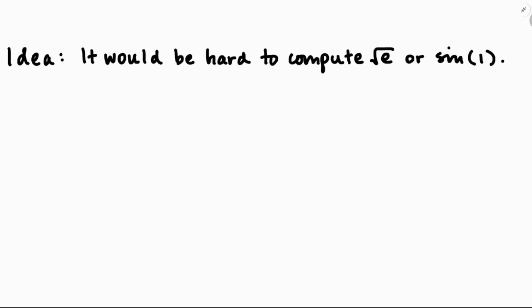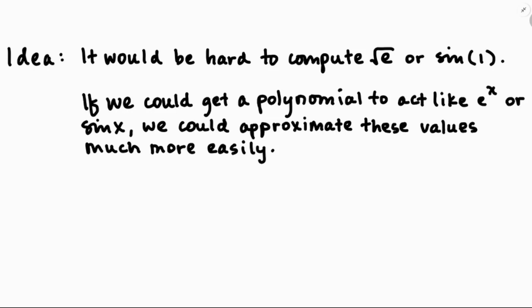In this video we're going to be turning things into polynomials. If you're wondering why, consider that it'd be really hard to compute the square root of e or the sine of 1. And if you're thinking 'I could just type that into a calculator,' how does the calculator actually do that so snappily? The answer is it uses a polynomial. So if we could get a polynomial to act like e to the x or sine x, we could approximate these values much more easily.